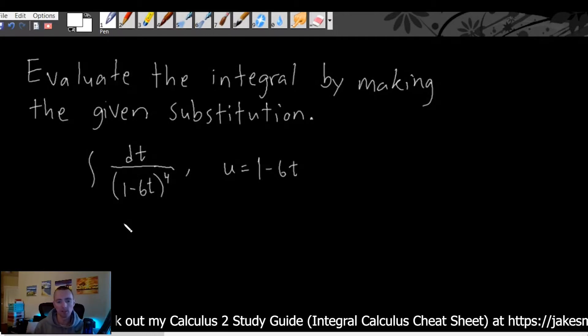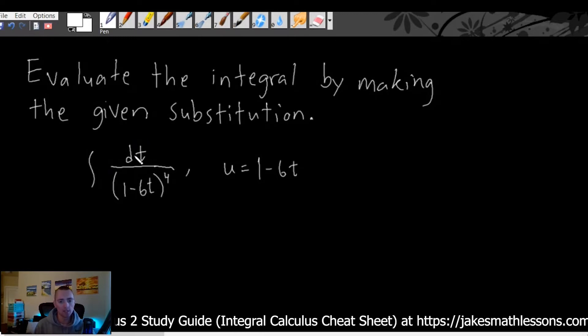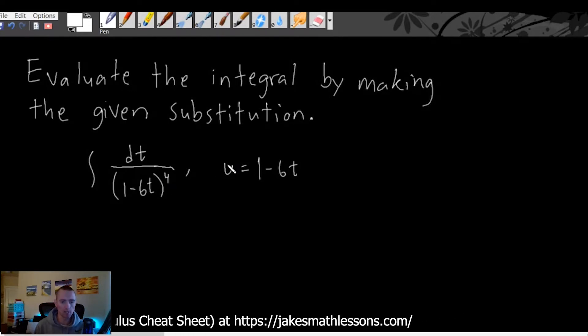In this case they're telling us that the integral we're going to solve is dt over (1 minus 6t) all to the fourth power, and then the substitution we're going to make is u equals 1 minus 6t.